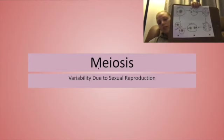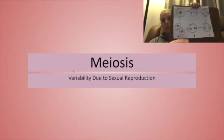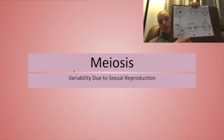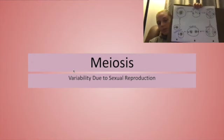Multicellular eukaryotes are going to use meiosis as a way to create sex cells that can be combined to create variation in their offspring. There are a lot of similarities between meiosis and mitosis and the processes, so I do want to review these steps with you really quick.